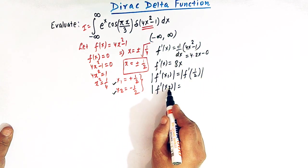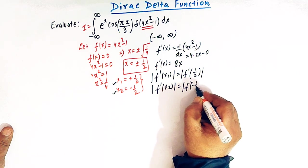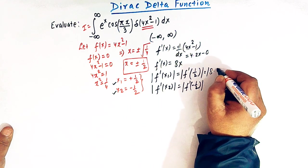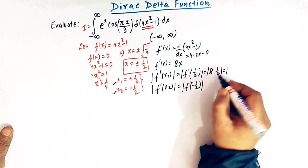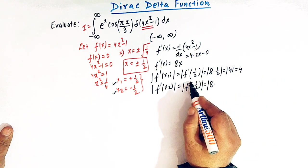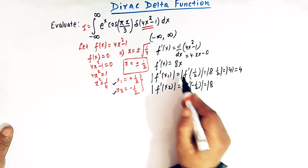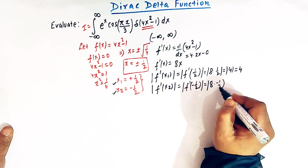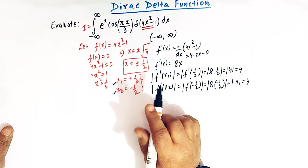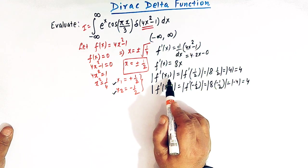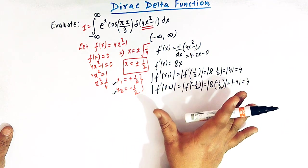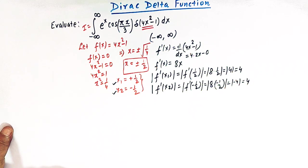And |f′(x₂)| = |f′(−1/2)|. Now, |f′(1/2)| = |8 × 1/2| = |4| = 4. And |f′(−1/2)| = |8 × (−1/2)| = |−4| = 4. So |f′(x₁)| = 4 and |f′(x₂)| = 4. Now let us write an important property of the Dirac delta function.